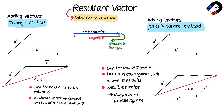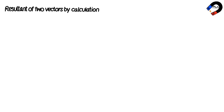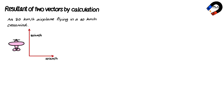To determine the resultant of two vectors at right angles by calculation: find the resultant velocity of an airplane flying at 80 kilometers per hour in a 60 kilometers per hour crosswind, as shown in the diagram. Draw a parallelogram with 80 km/h and 60 km/h as sides forming a rectangle. The resultant velocity is the diagonal of the parallelogram.